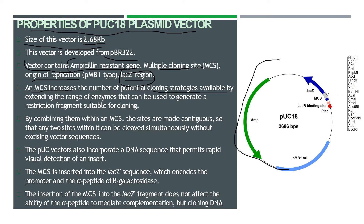By extending the range of restriction enzymes, the MCS generates restriction fragments suitable for cloning. By combining them with an MCS, the sites are made contiguous so that any two sites within it can be cleaved simultaneously without excising vector sequences. The pUC vector also incorporates a DNA sequence that permits rapid visual detection of an insert.